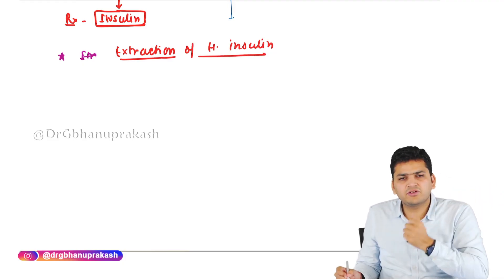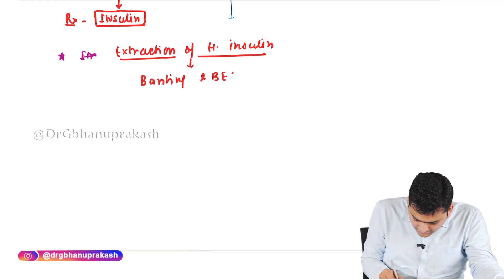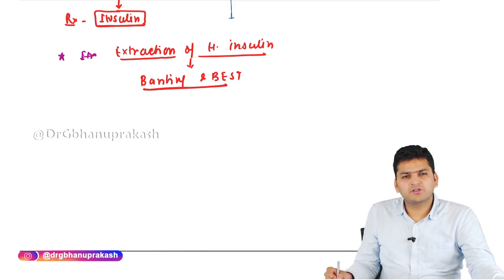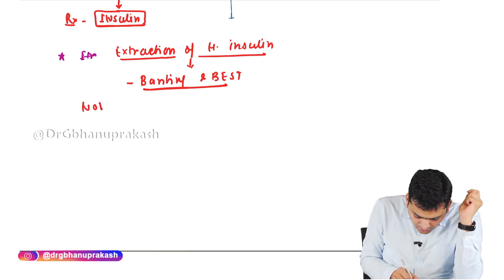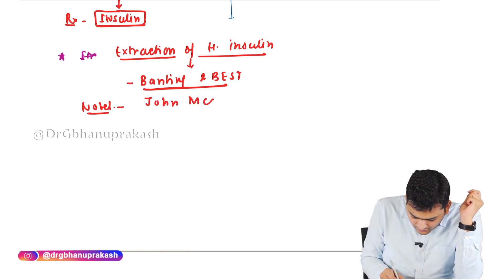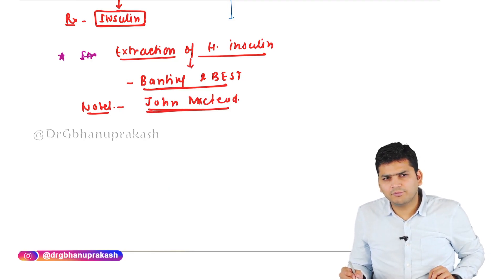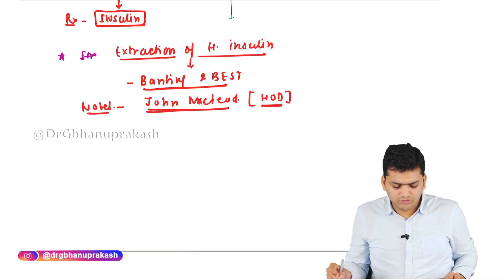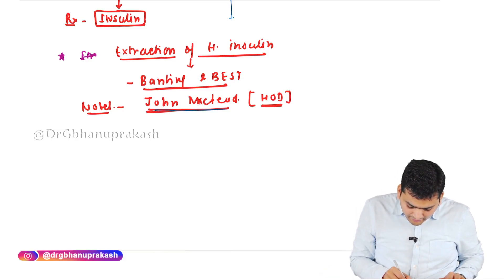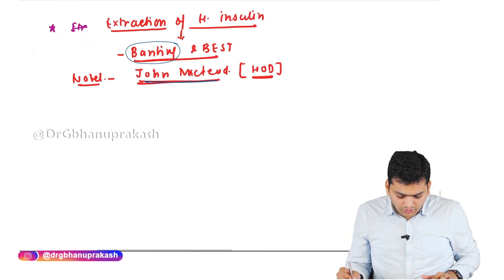The first extraction of human insulin was done by scientists Banting and Best, who extracted it from the pancreas for the first time. The Nobel Prize for this work was given to John McLeod, who was the HOD and director of the institute. McLeod shared the Nobel Prize with Banting. So Banting and John McLeod received the Nobel Prize for the first extraction of human insulin.